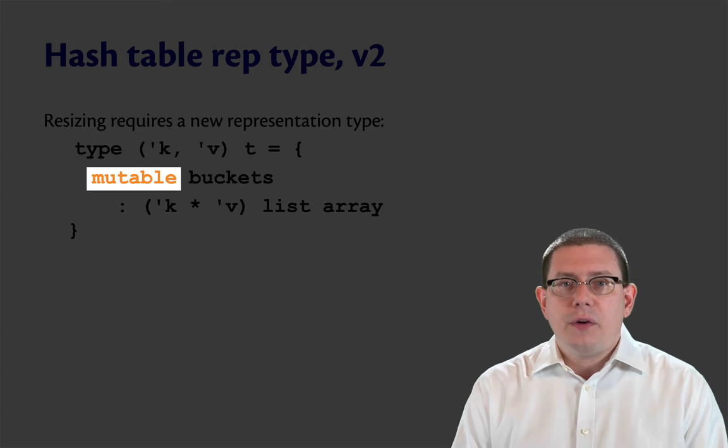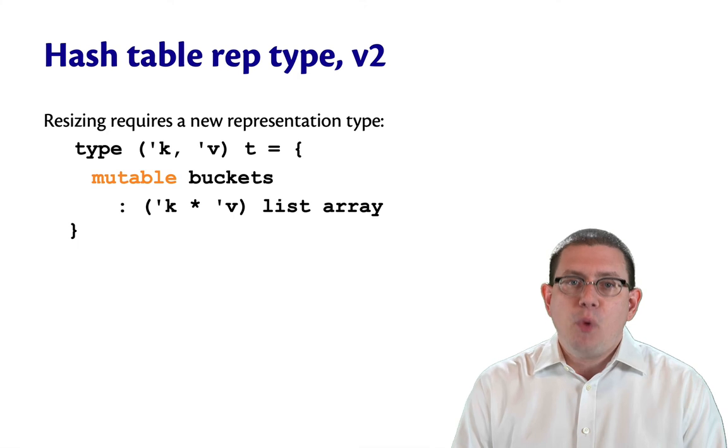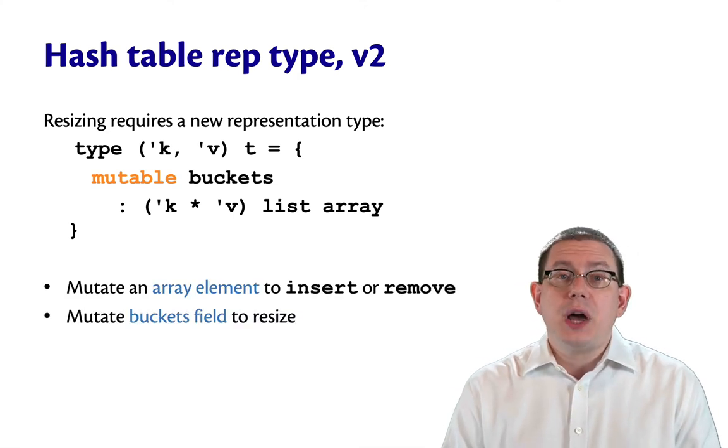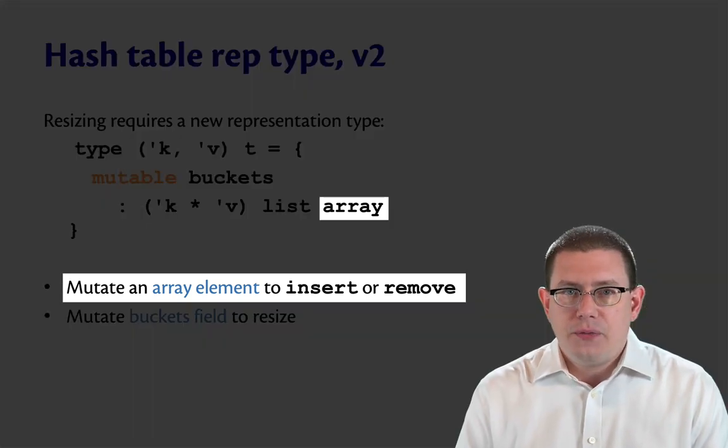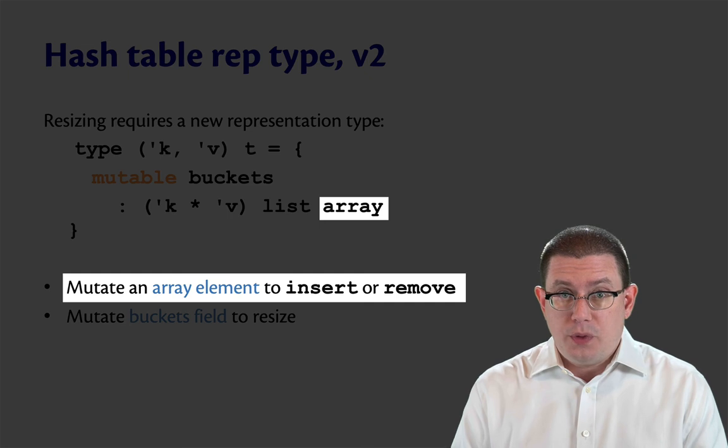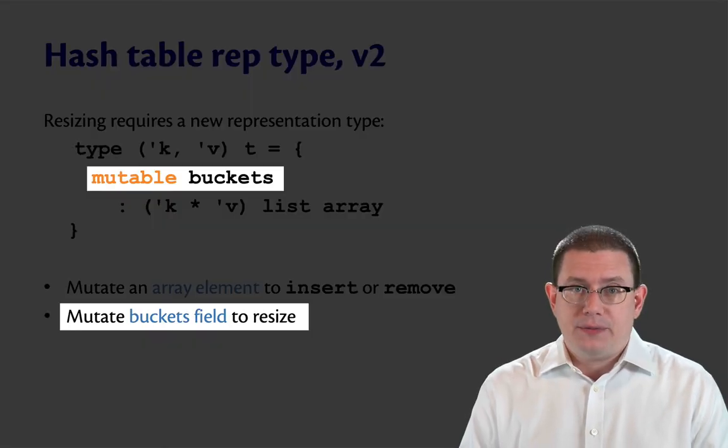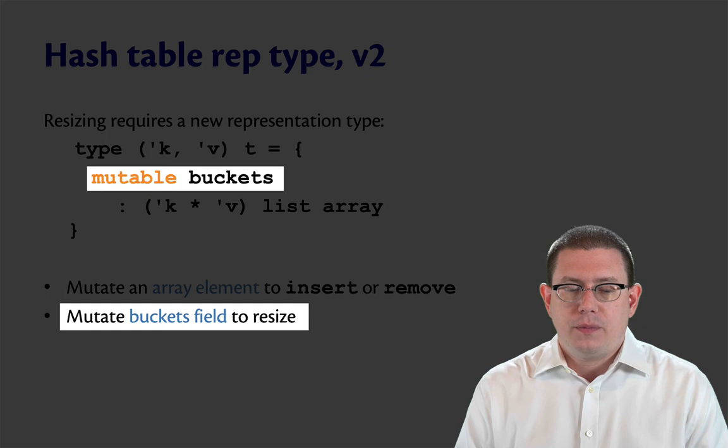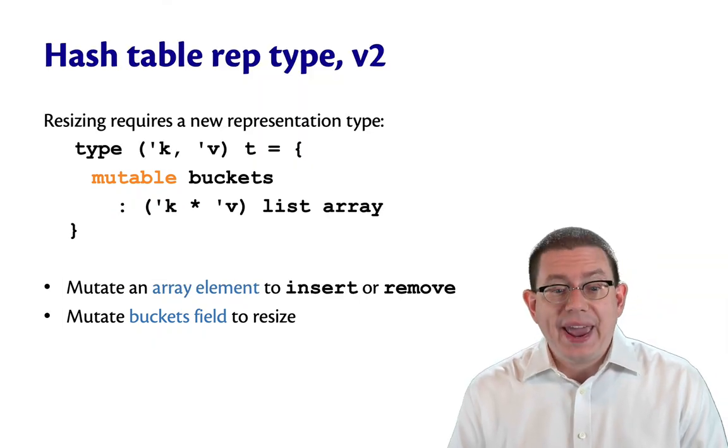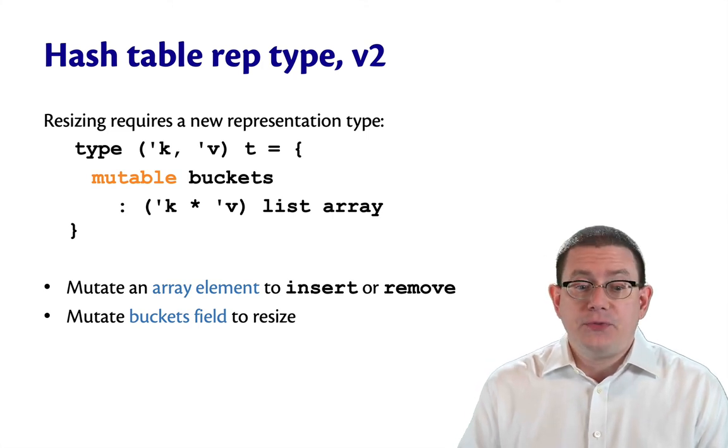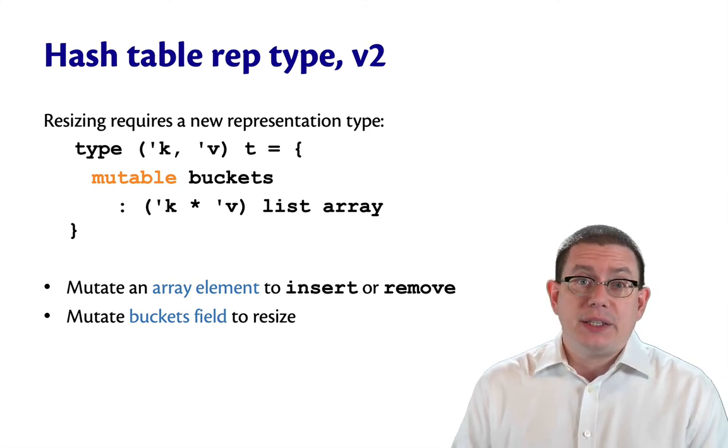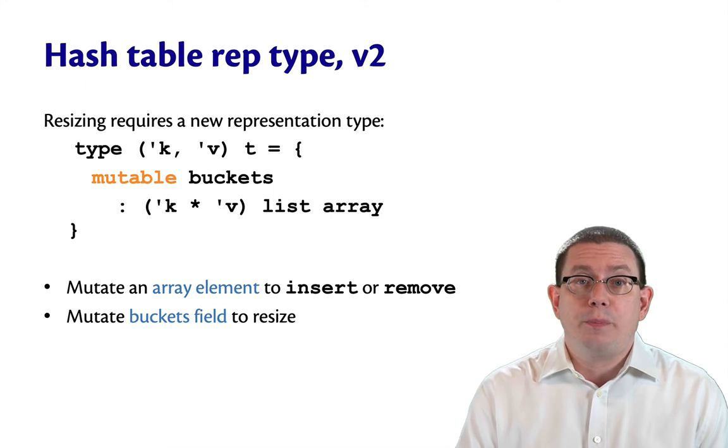To make the array resizable, that field of the record is mutable. What that means is I can mutate that field at the point in time at which I need to increase the size of the array. So notice the double level of mutability here. The array itself has elements that are mutable, and the record has a buckets field that's mutable. We mutate array elements to do an insert or remove. We mutate the buckets field when we need to resize the array to keep the load factor bounded by a constant.